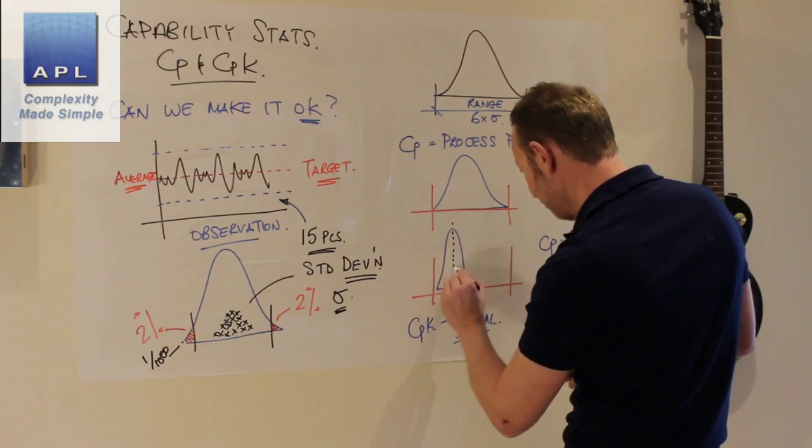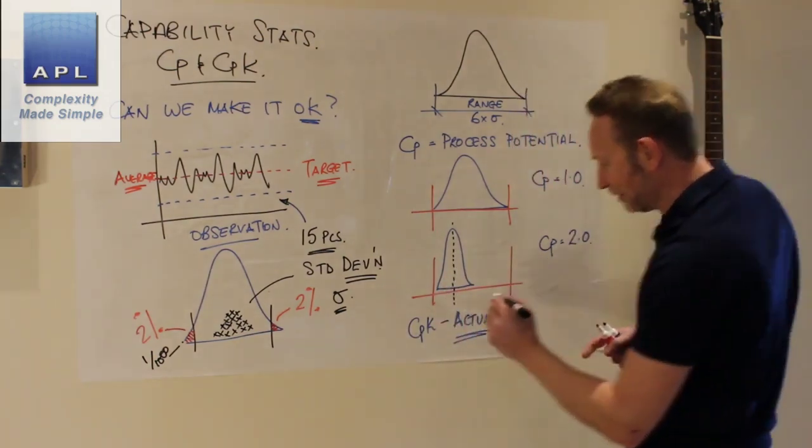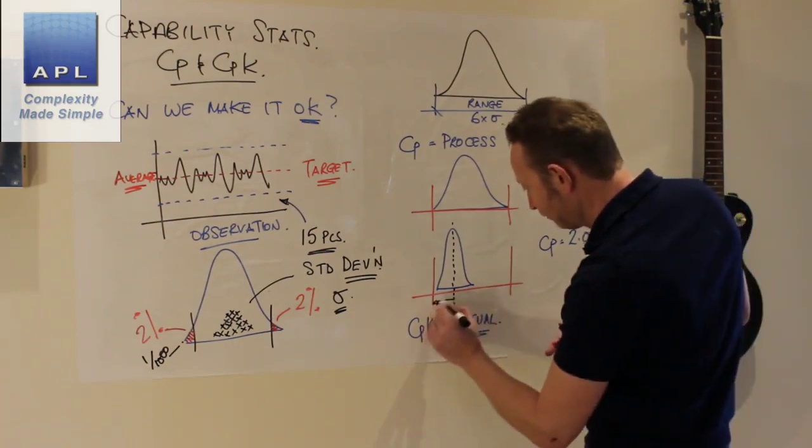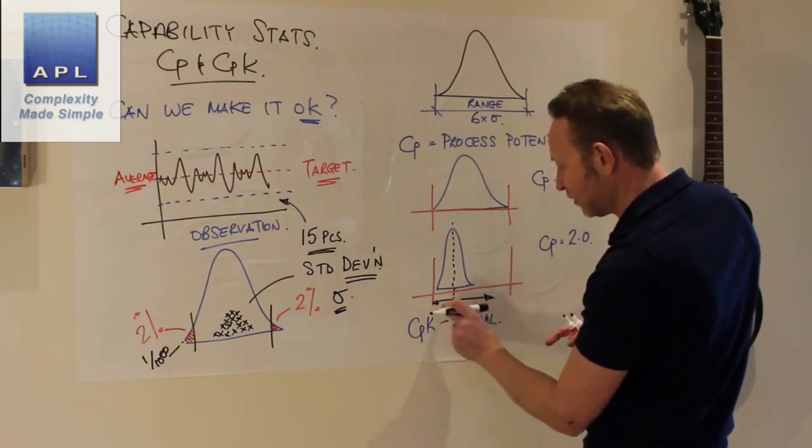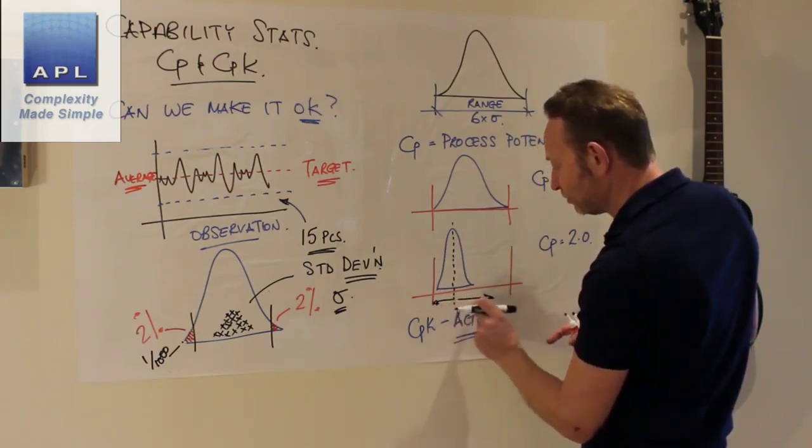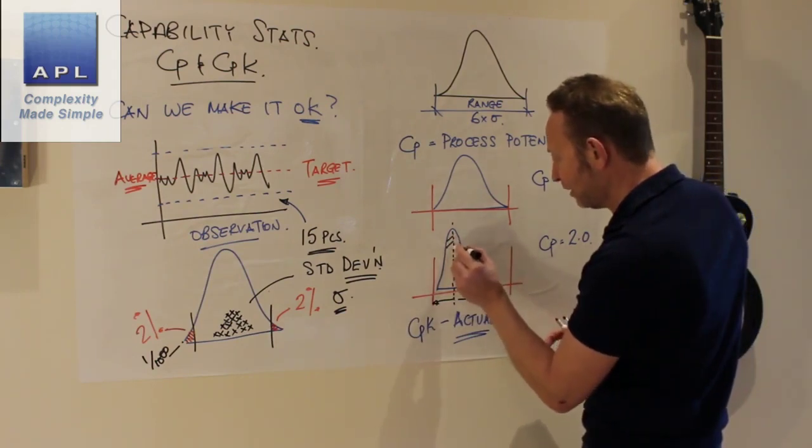So let's put the center on this thing, so I drop the middle of my results down. Now then, the CPK just says simply this: please look left, please look right from the average, whichever is the smallest figure. And of course in this case we are looking left.